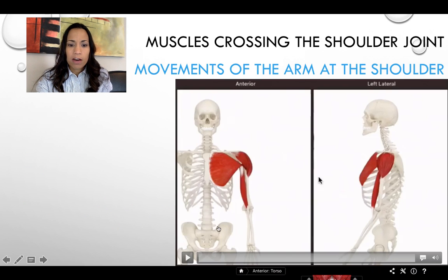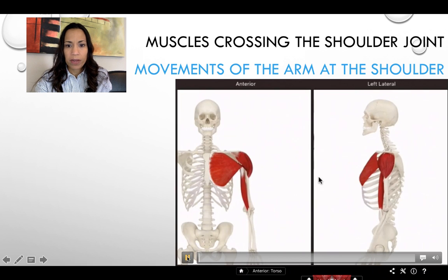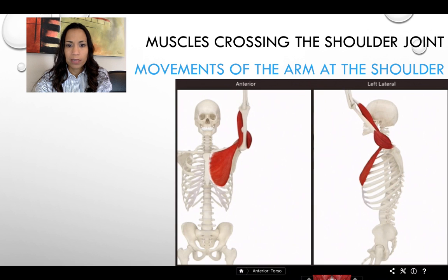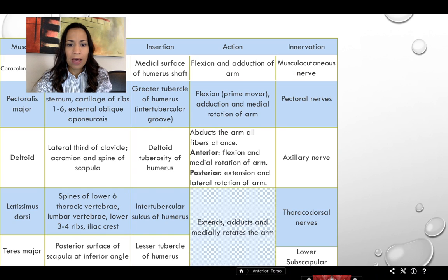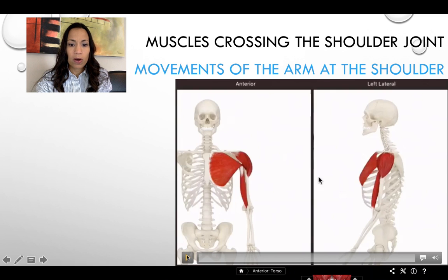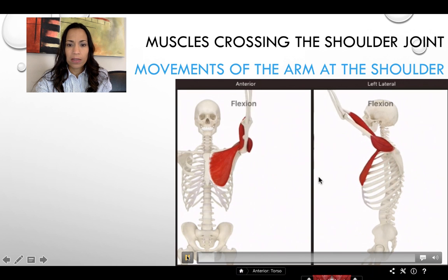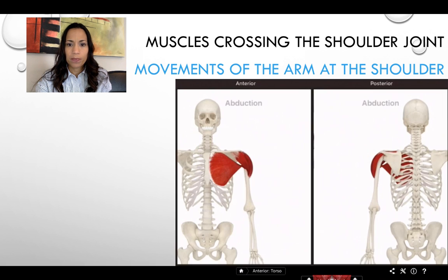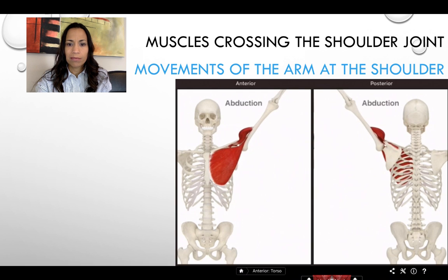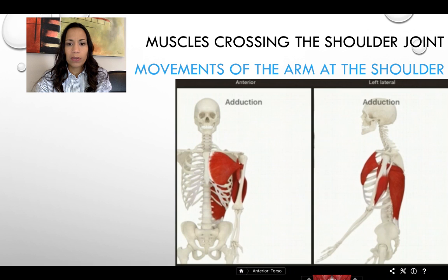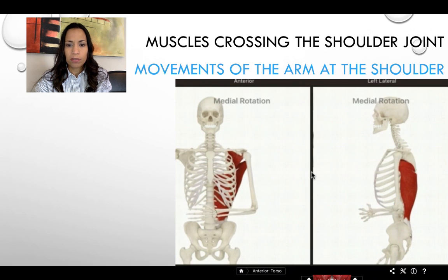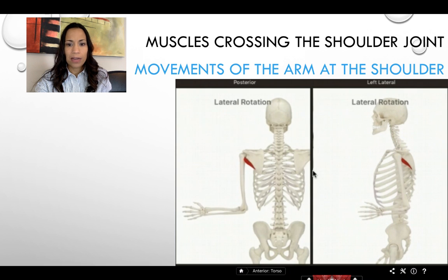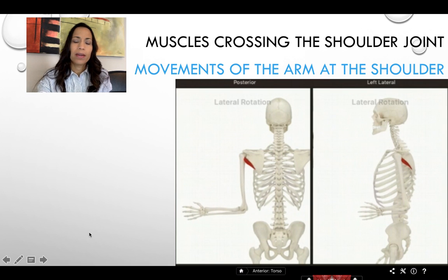The movements of the arm are: flexion — all the muscles involved cross the joint anteriorly; extension — muscles cross the joint posteriorly; abduction — muscles cross laterally; adduction — muscles are located medially; and medial rotation and lateral rotation.